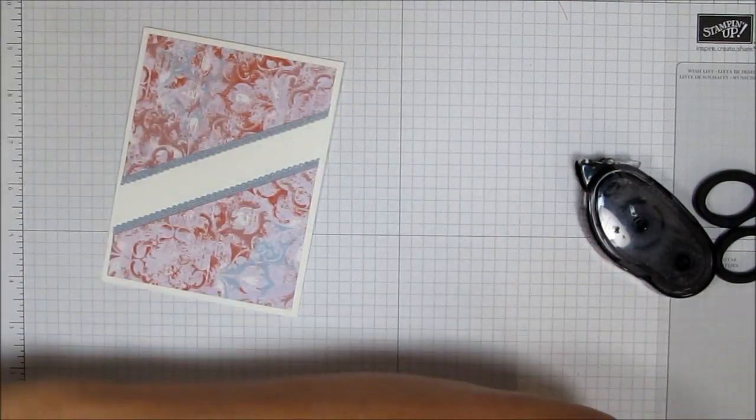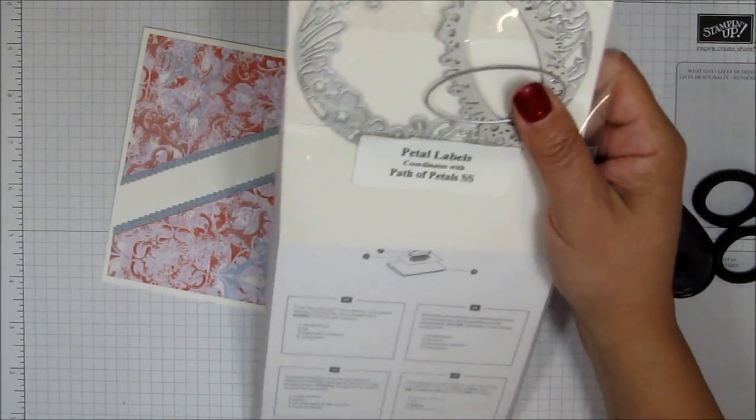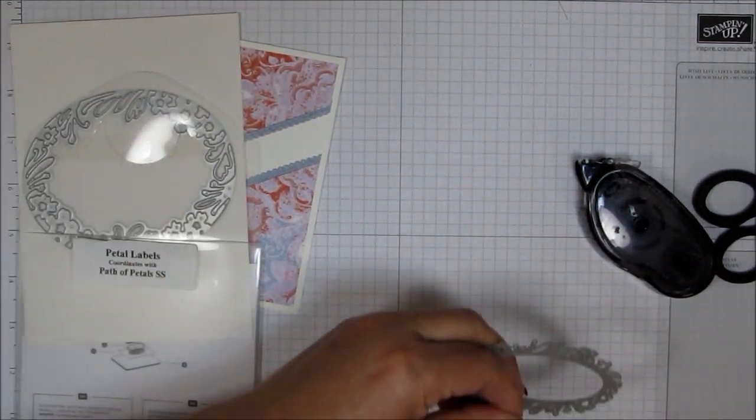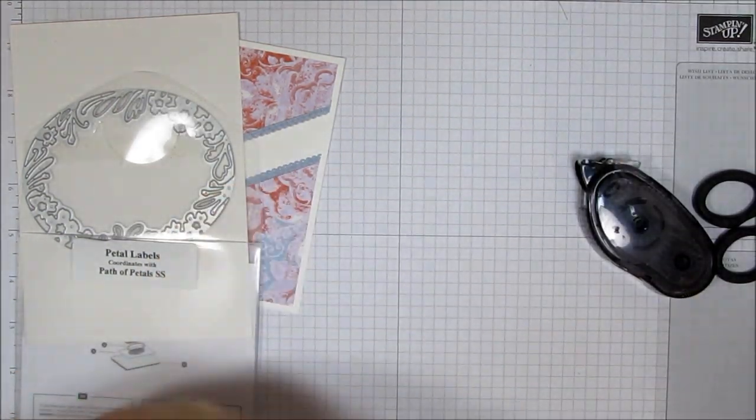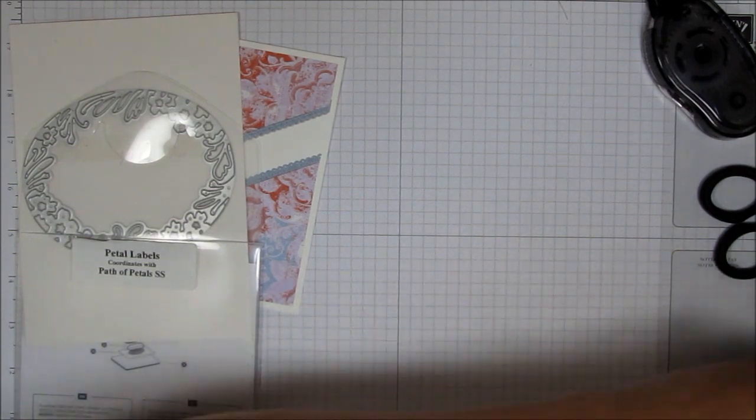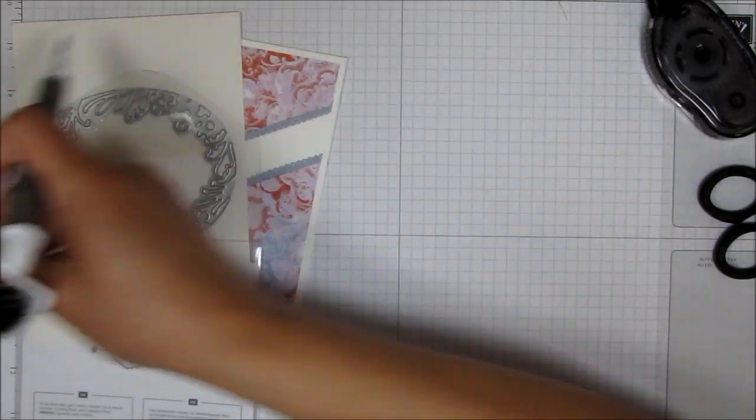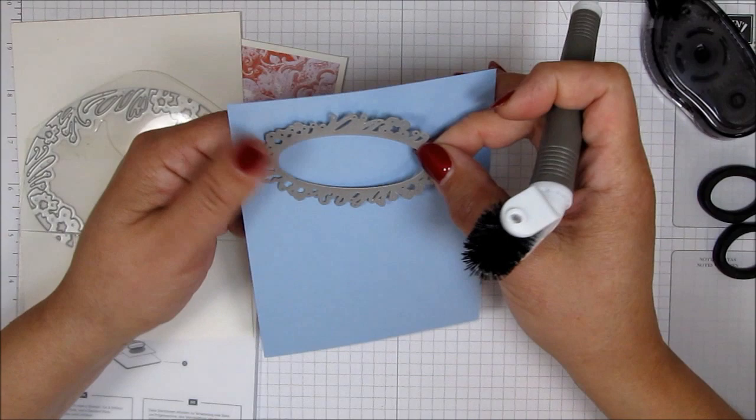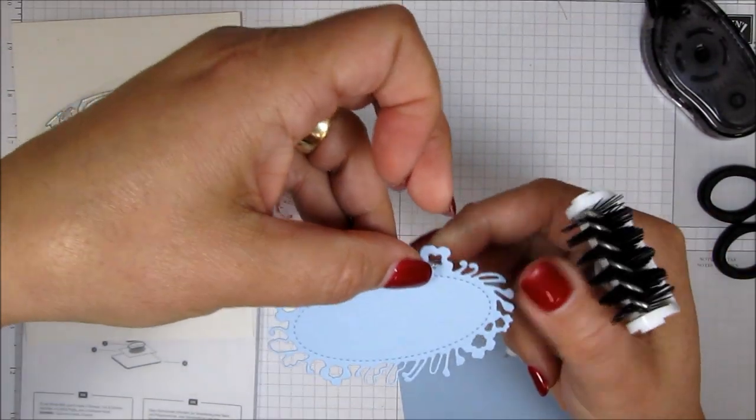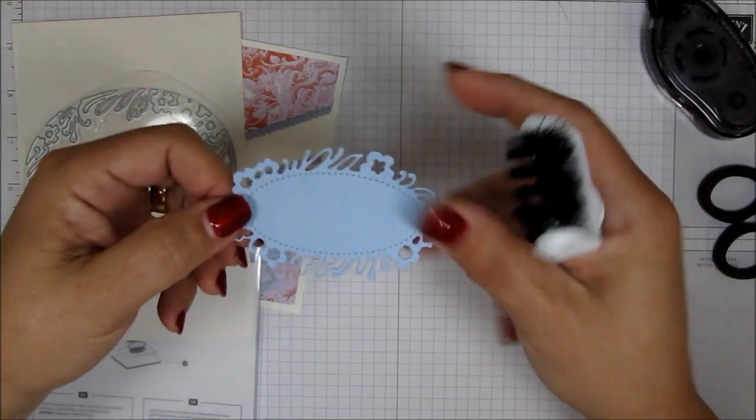And now you've got a pretty scalloped edge on both sides that match that seaside spray in this Woven Thread Designer Series paper. Now the next thing you want to do is you want to take your Path of Petals labels dies. And you're going to be using this die. Look, I've got some silver in there. Let me get that little piece of silver out with my Take Your Pick tool. I was die cutting some silver sparkle paper. This is the die you're going to use. And you're going to use it with some seaside spray. And take that to the Big Shot. And what you'll have is this. Take it to your die cutting machine and you're going to get this.